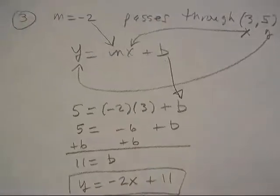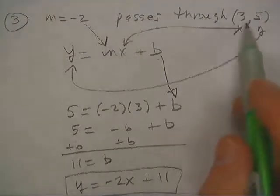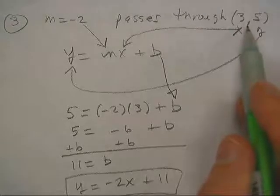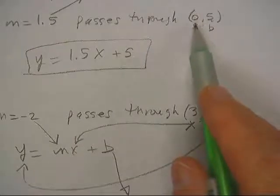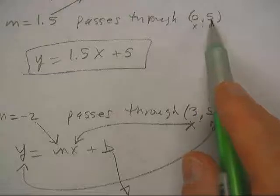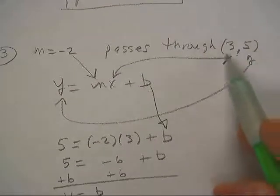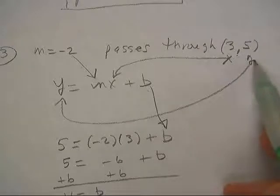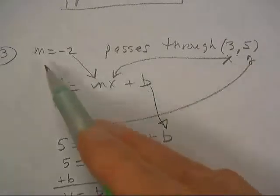So make sure you track with this, because they're not going to give you the intercept too often like they did on this one. If x is ever zero, that's the intercept, you don't even have to solve. But notice whenever they change it, we want to put the y, the x, and the m into this equation and solve for b.